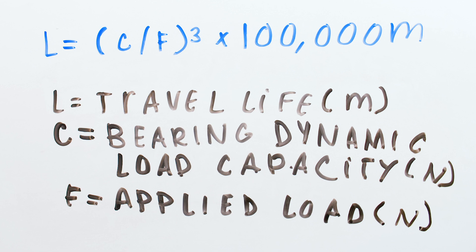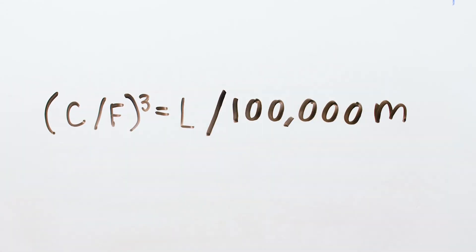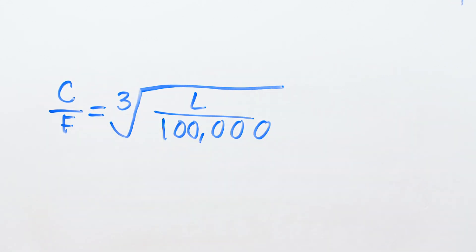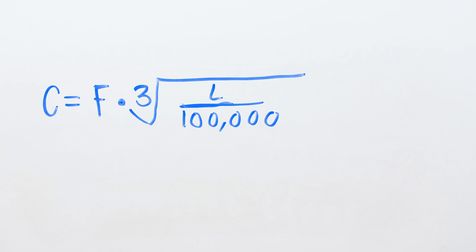In order to use this equation to find the required bearing load capacity based on a given life, we just need to rearrange the equation to solve for C. First, we'll move the ratio of load capacity to applied load, C over F, to the left-hand side of the equation. Then we'll move life to the right-hand side. Next, we'll take the cube root of both sides to get rid of that third power. Then we'll move the applied load, F, to the right side.